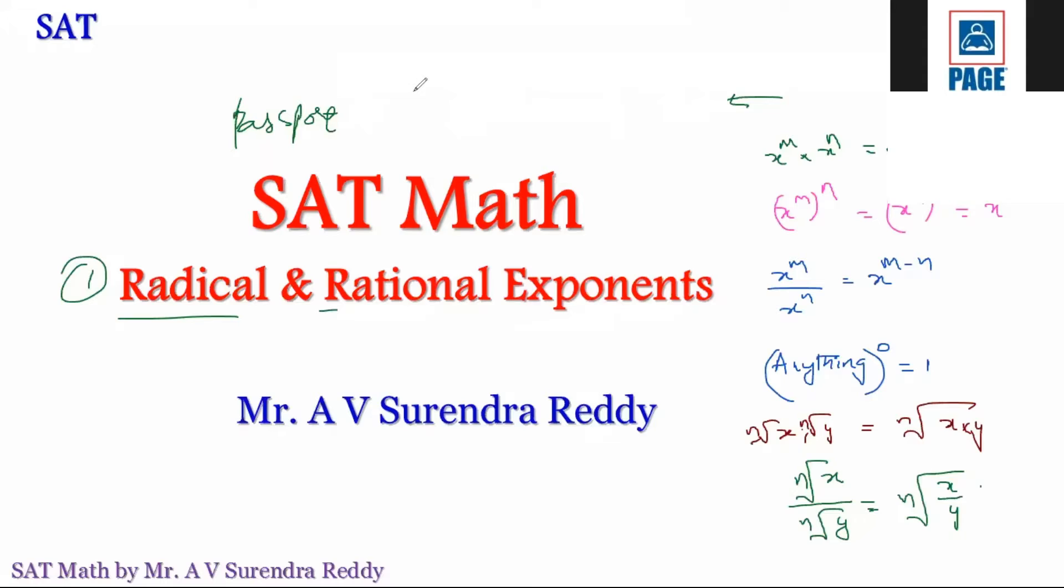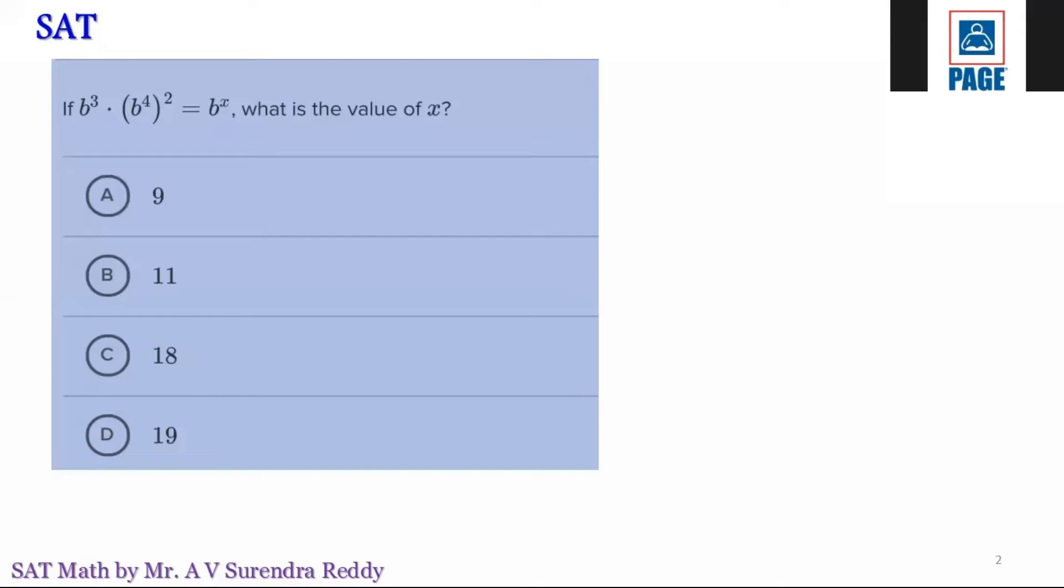So in the left side expression, this is b^3 · (b^4)^2, which is b^8. This is b^x. When the bases are same in the product, the powers can be added. So b^11 = b^x. Bases are same, powers are same. What is the value of x? 11, which means option B.